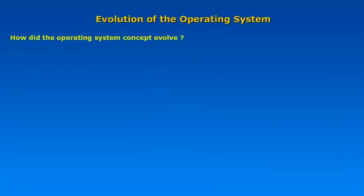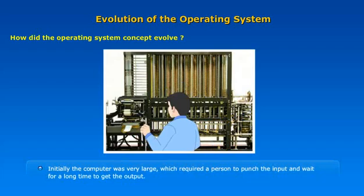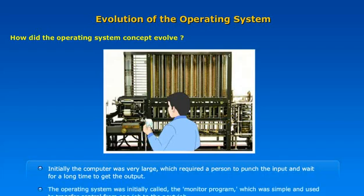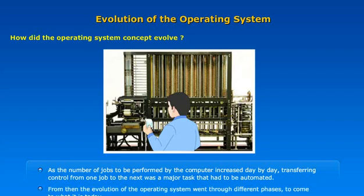We will see how the operating system concept evolved. Initially, the computer was very large and required a person to punch the input and wait a long time to get the output. The operating system was initially called the Monitor Program, which was simple and used to transfer control from one job to the next. As the number of jobs increased, transferring control had to be automated, and the evolution went through different phases to come to what it is today.